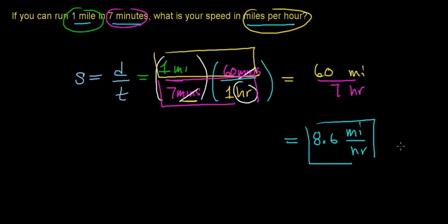So if you can run a distance of one mile in seven minutes, your average running speed in miles per hour is 8.6 miles per hour.